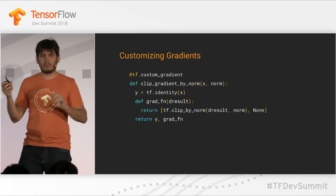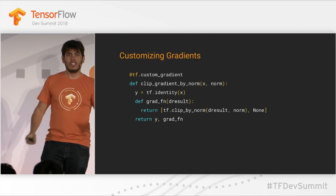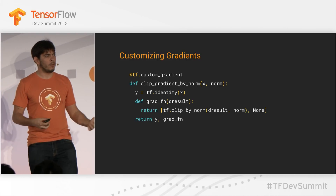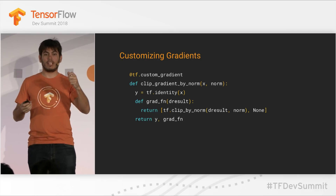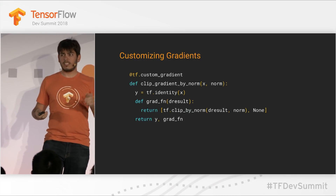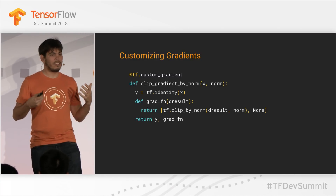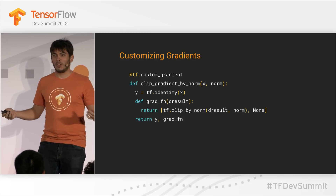Together with eager, we're bringing a lot of new APIs that make it easier to build TensorFlow graphs and execute models, and these APIs are compatible with both eager execution and graph building. One recurring feature request has been how to customize gradients in TensorFlow. We're introducing a new API that works in both eager and graph execution. For example, you can make a version of tf.identity that in the backward pass clips its gradient — it only takes six lines of code.